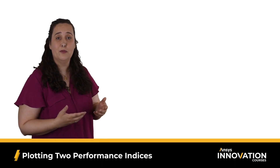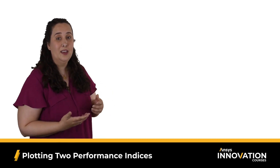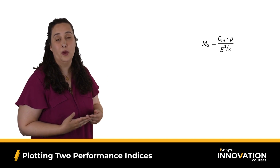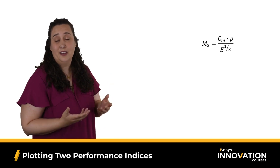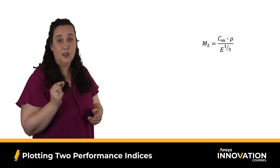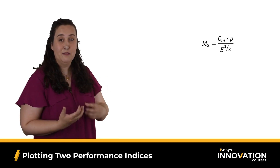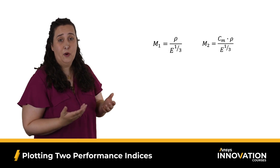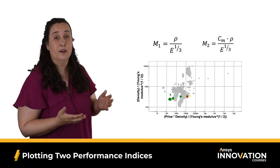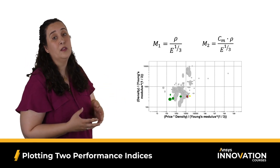Let's call the index equation for mass performance M1 and for cost performance M2. Looking at the booklet, M2 is the cost of material per kilogram times density, divided by Young's modulus to the one-third power. Notice this is very similar to the index derived in Course 3 for minimizing mass — but remember, we inverted that index because we were maximizing on that chart. Here we'll use the minimizing version. Now with our two performance indices, we plot M1 on the y-axis and M2 on the x-axis, with optimal materials in the lower left-hand corner.